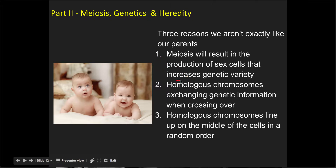Meiosis actually increases genetic variety and genetic diversity. How does it do this? Homologous chromosomes exchange genetic information when crossing over, and it never really happens in the same way, so different DNA is swapped between the two homologous chromosomes, giving us some unique combinations of DNA and traits. Also, homologous chromosomes line up in the middle of the cell in a random order during metaphase, and any time DNA moves in a random fashion, we're going to get new diversity.